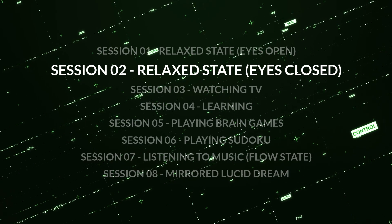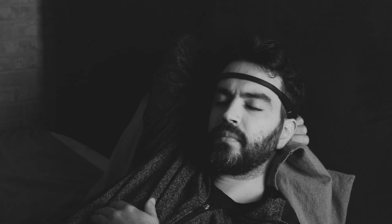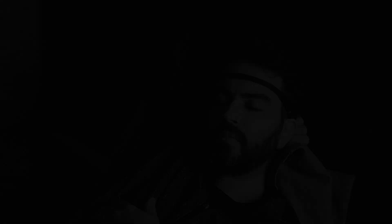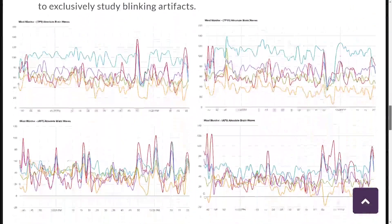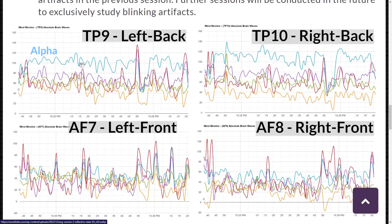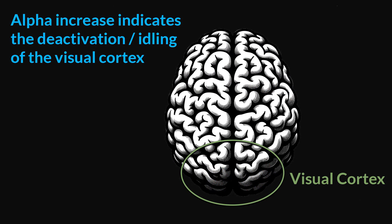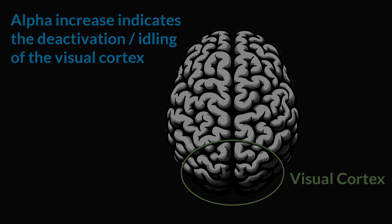Session 2 is a continuation of Session 1 except I had my eyes closed. The most noticeable difference is a very large increase in alpha in the back sensors. This is to be expected — the visual cortex is located at the back of the brain, so when we close our eyes, that part of our brain enters into a standing-by state.